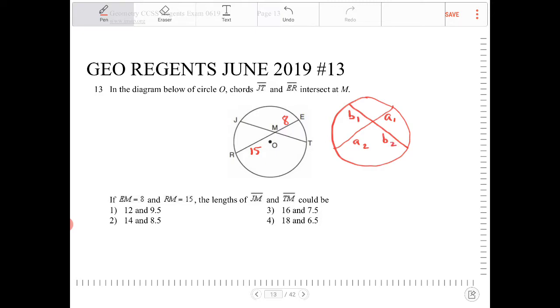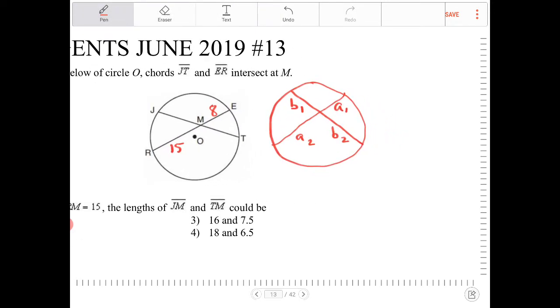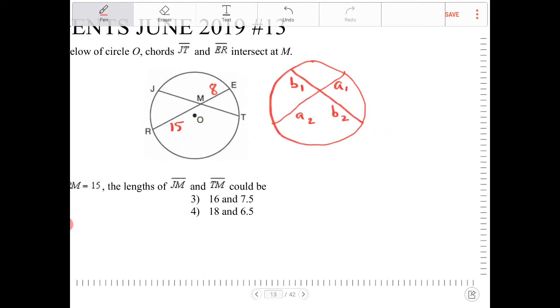Both chords do not have to bisect each other. They don't have to intersect in any kind of proportion. But what does hold true is this. The partitions of chord A, if I multiply them together, the products of the partitions of chord A will equal to the products of the partitions of chord B.